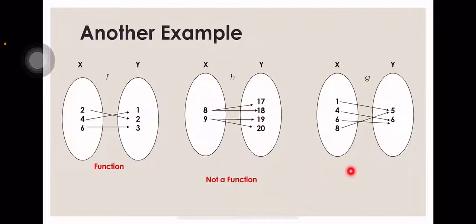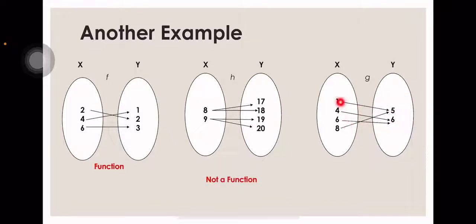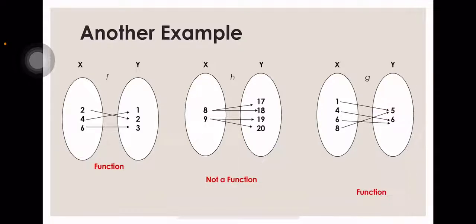The last diagram has X values of 1, 4, 6, and 8. As you can see, this is many-to-1, because the Y values repeat — both 1 and 8 share a Y value, and 4 and 6 both map to the Y value 6. So this is also a function, because many-to-1 is a function.